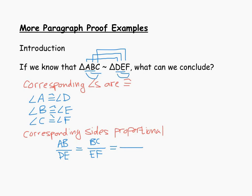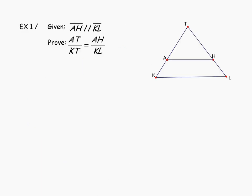It's the outer two letters in each name. So again, if we can establish that two triangles are similar, we could make conclusions like this in addition to just saying the triangles are similar, and that's what our proofs are going to look like today. In our first example, we're given that AH is parallel to KL, and we're asked to prove the proportion that AT to KT is proportional to AH to KL. To prove a proportion like this, we're going to have to find a pair of similar triangles in this diagram.